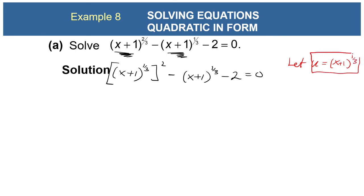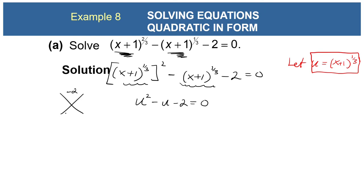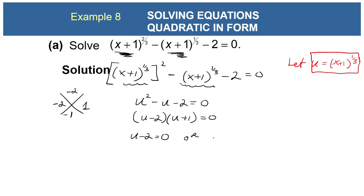Let u = (x+1)^(1/3). With u-substitution this becomes u² - u - 2 = 0. That's much easier — it's just a factoring problem. The two numbers are 2 and 1, giving (u - 2)(u + 1) = 0. So u = 2 or u = -1.